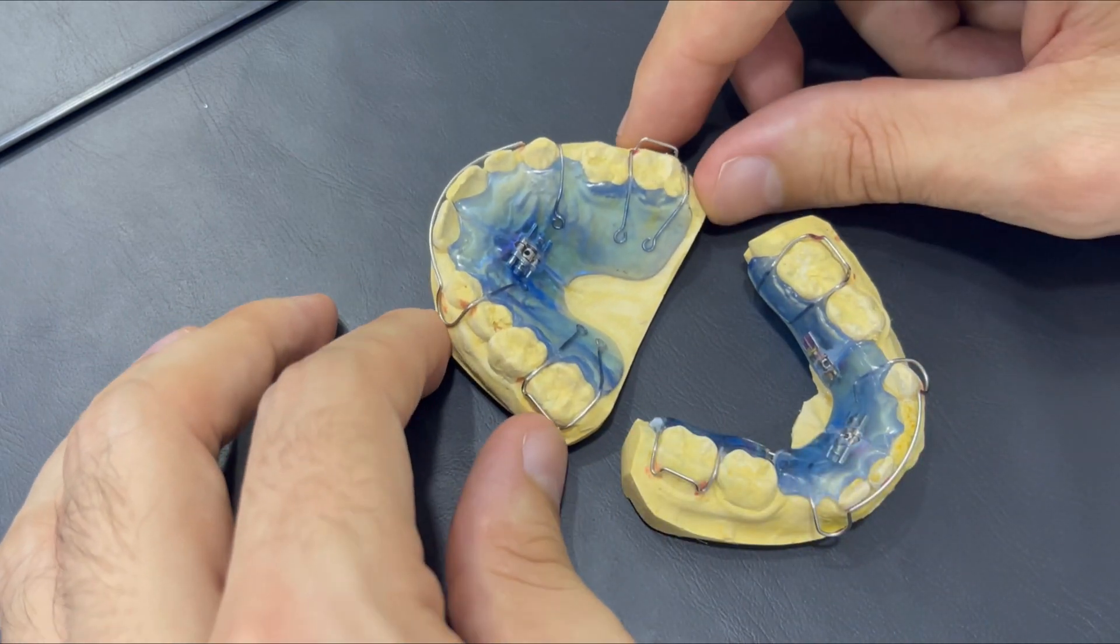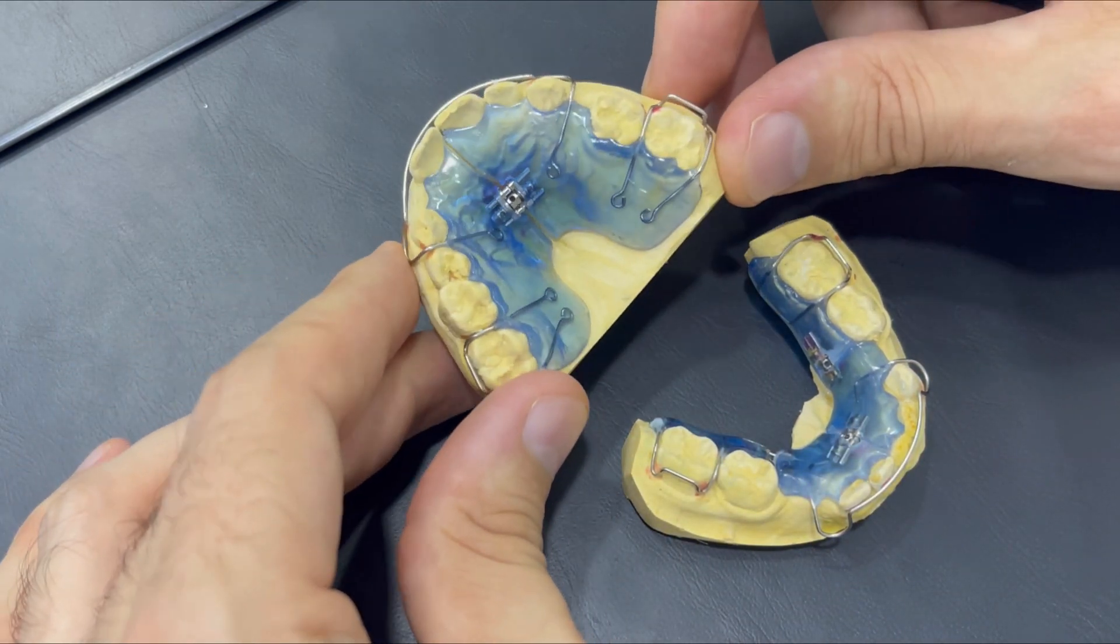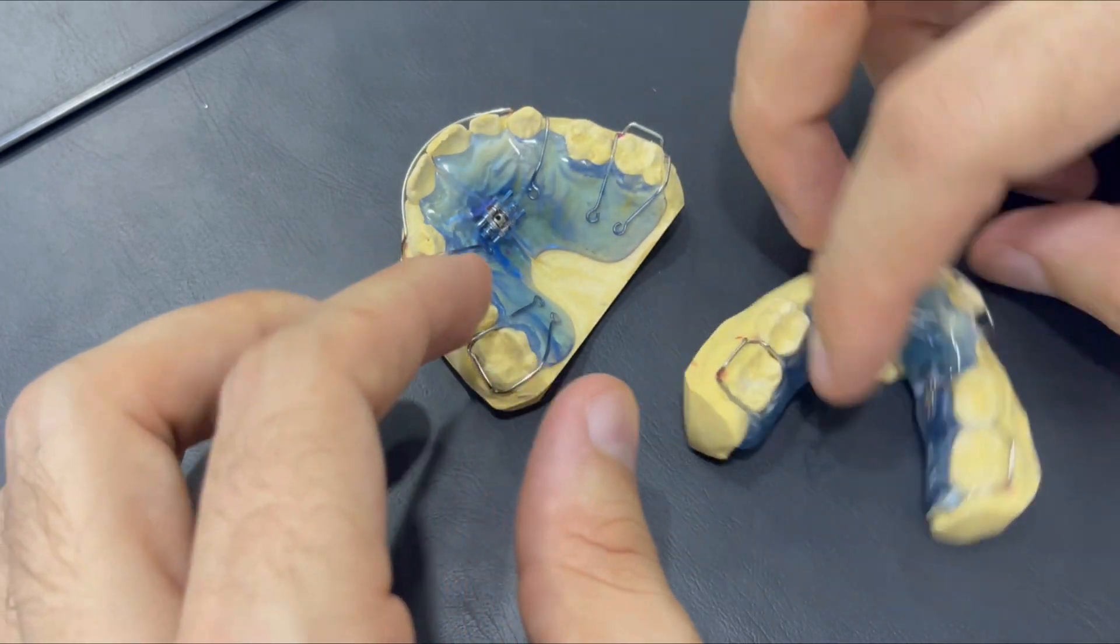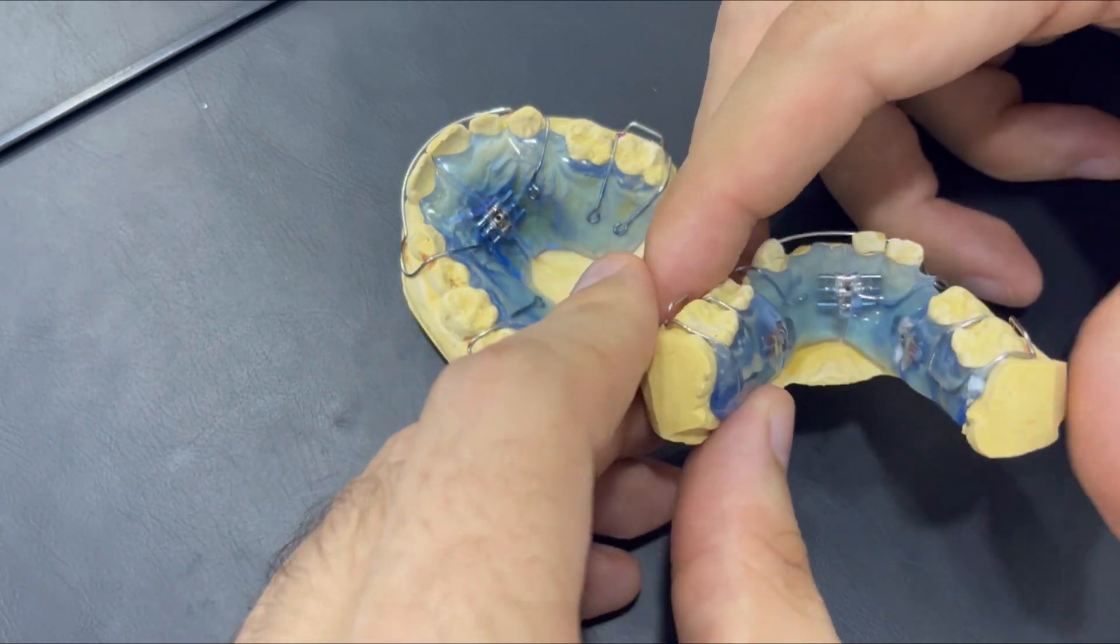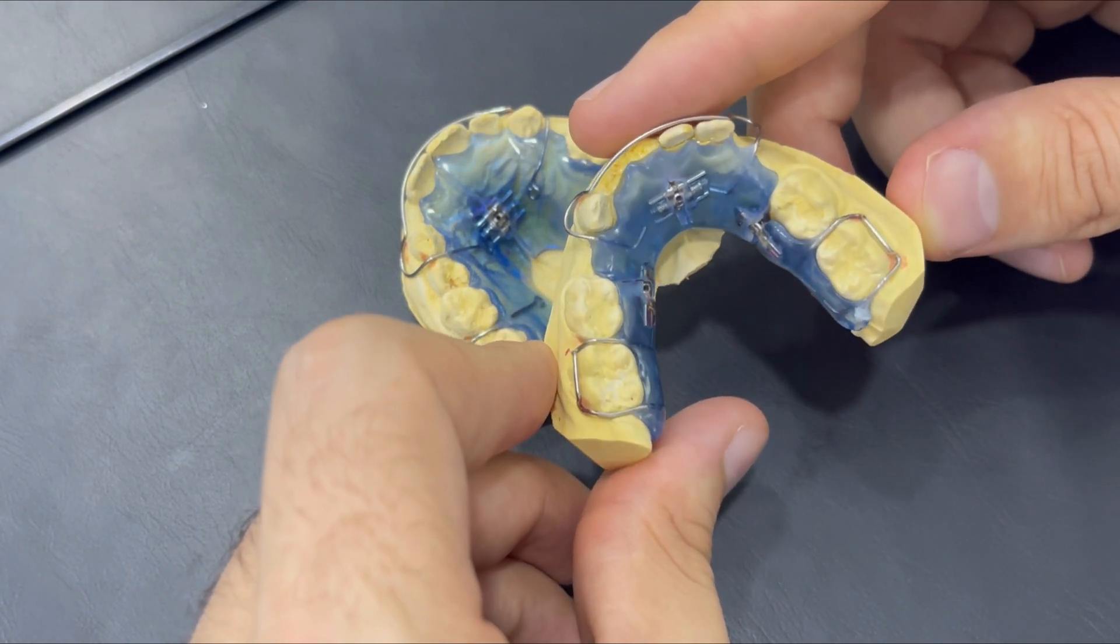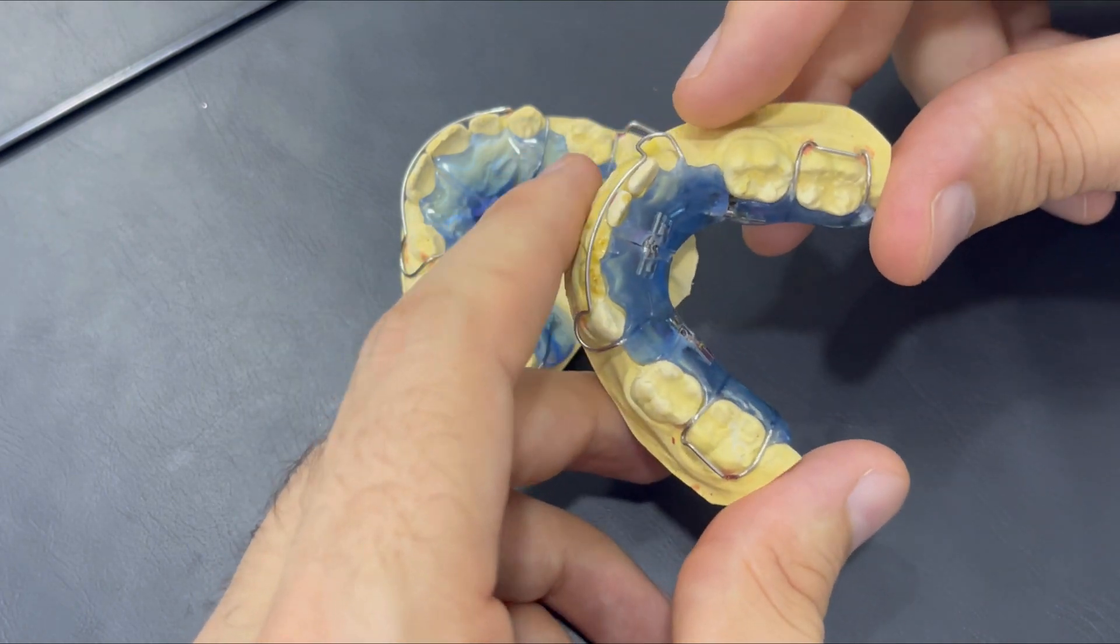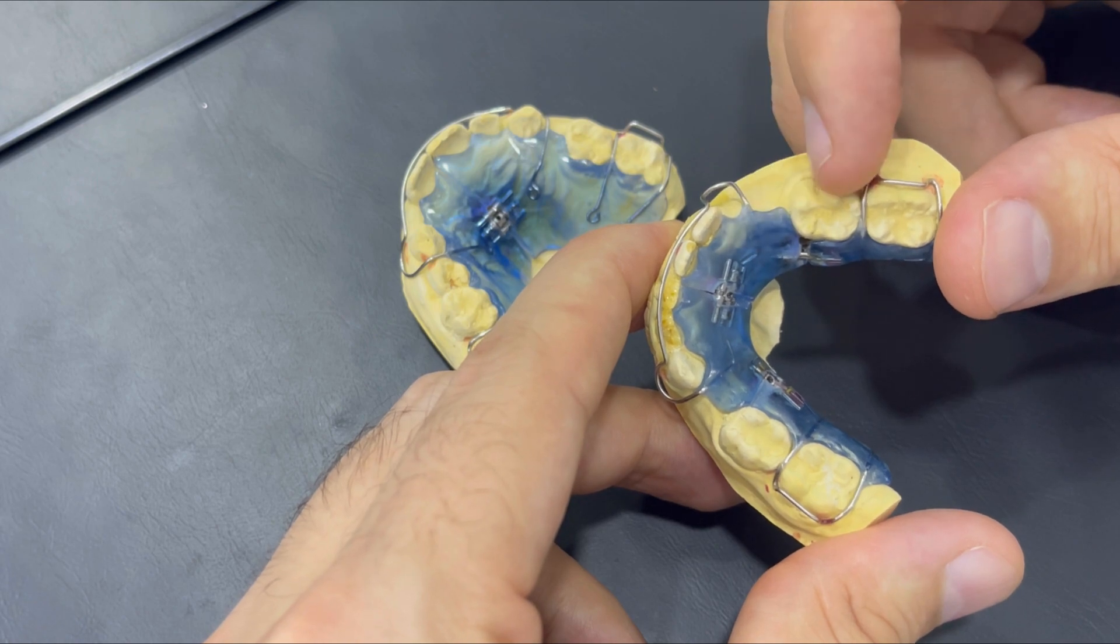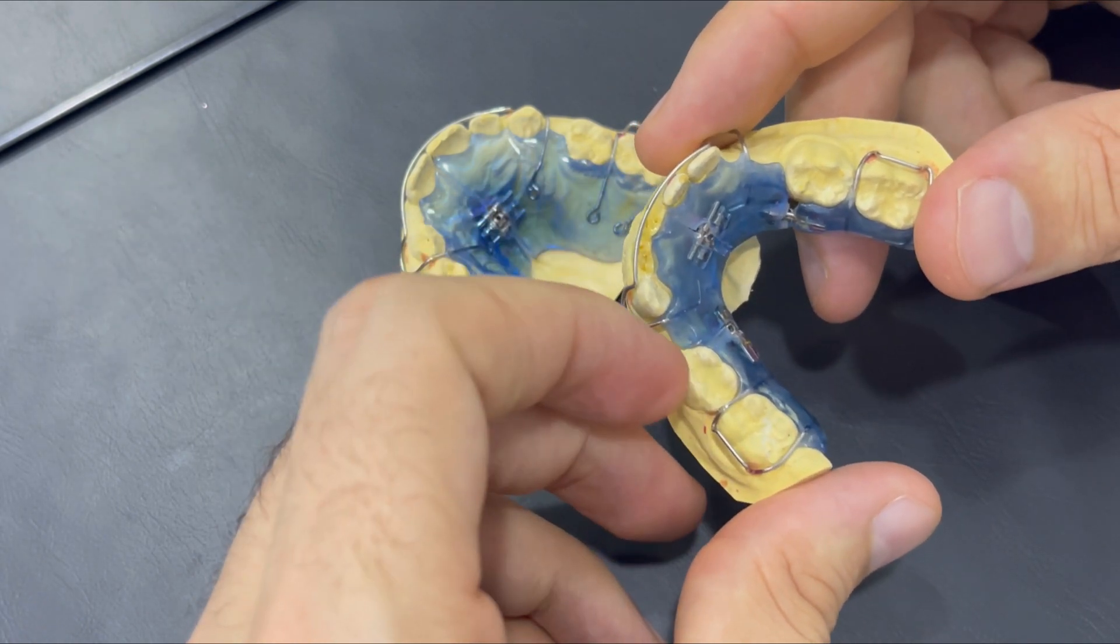In this Howley removable expander, we can see the Howley screw expander in the middle in the upper appliance, and the lower is 3D expansion actually. As you see, there's three screws: one for horizontal expansion and the other one for the sagittal.